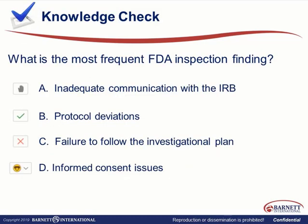So just a quick check here — using your icons, what's the most frequent FDA inspection finding? If you could go ahead and click on the icon for that. The answer is: it's failure to follow the investigational plan. Protocol deviations is number two. Failure to follow the investigational plan is number one.